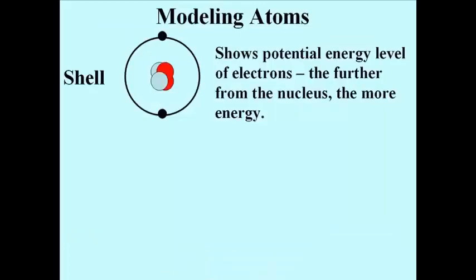To understand how the energy and location of electrons in atoms and molecules explains their chemical properties, we model atoms in two ways. The shell model shown here emphasizes the potential and kinetic energy of electrons. The further from the nucleus, the faster the electrons move.